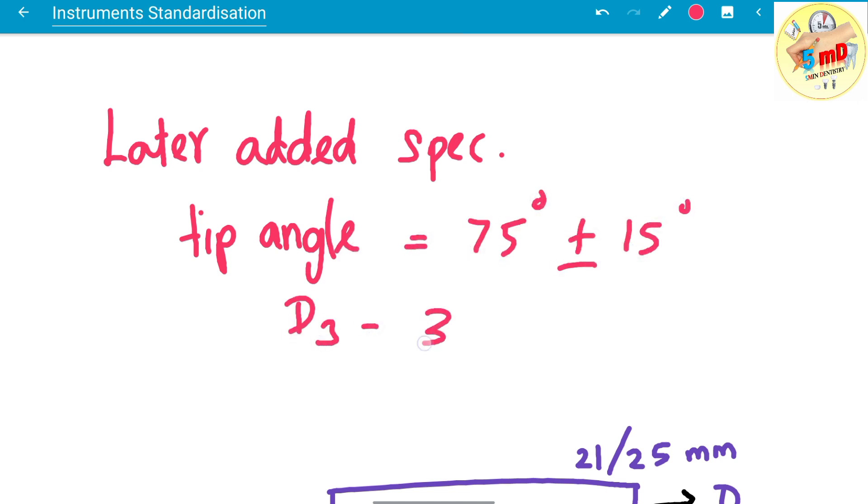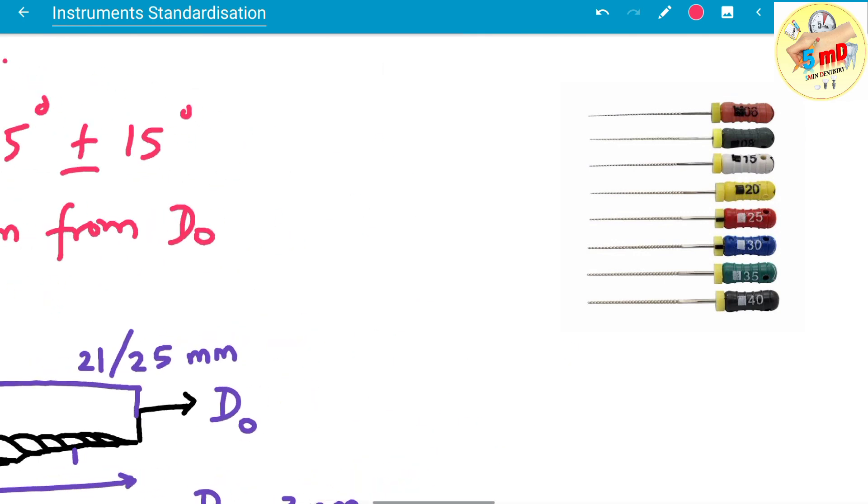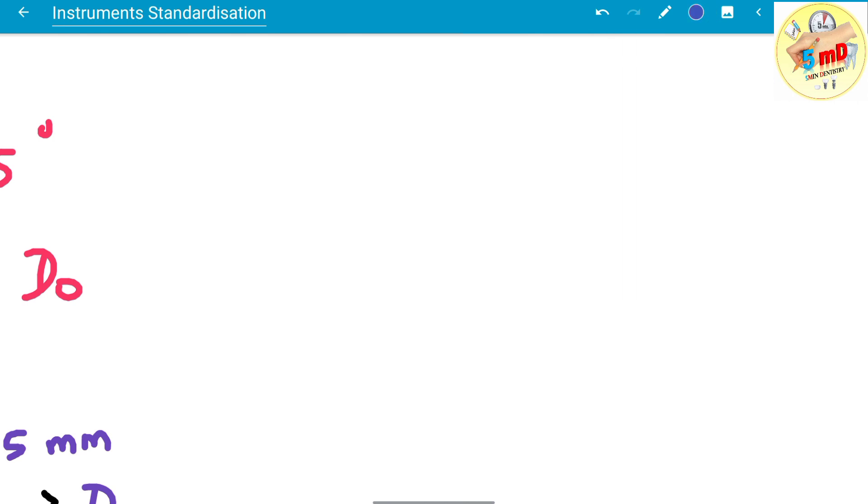Tip angle is usually 75 degrees plus or minus 15 degrees. And also color coding were given later, which is usually a repeating set of colors. For 6, 8, and 10 you have pink, grey, and purple.